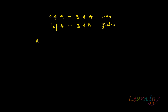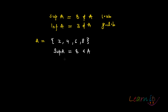Now let's take set A equal to the elements {2, 4, 6, 8}. These four elements are in the set. The supremum of A will again be eight, but here it belongs to A because it's a set of certain discrete elements.